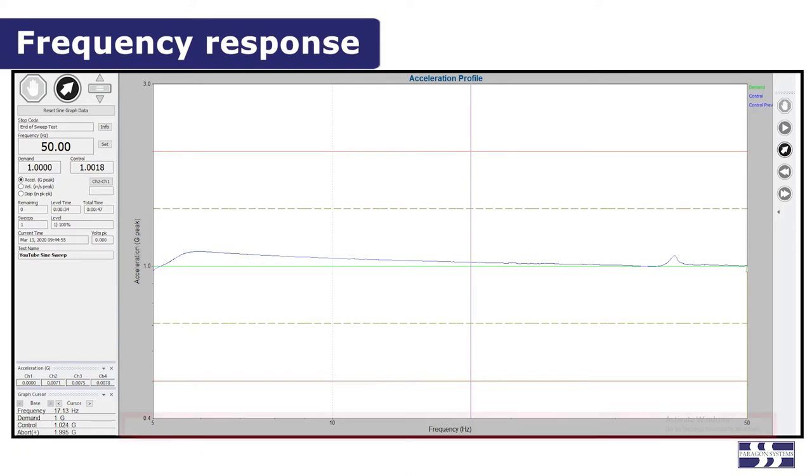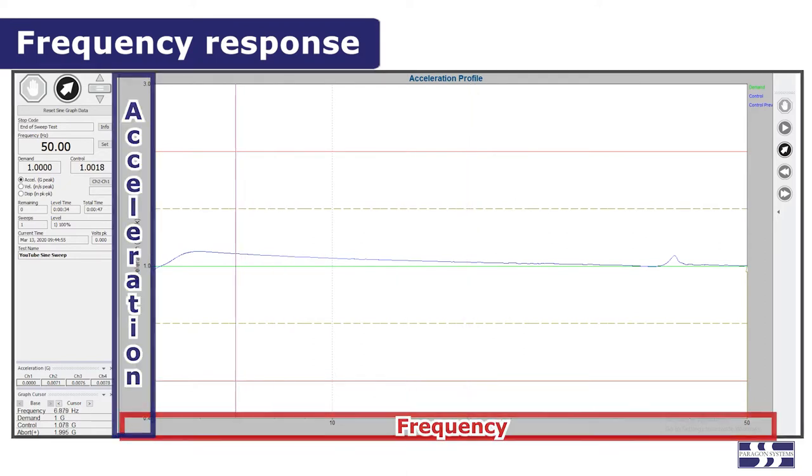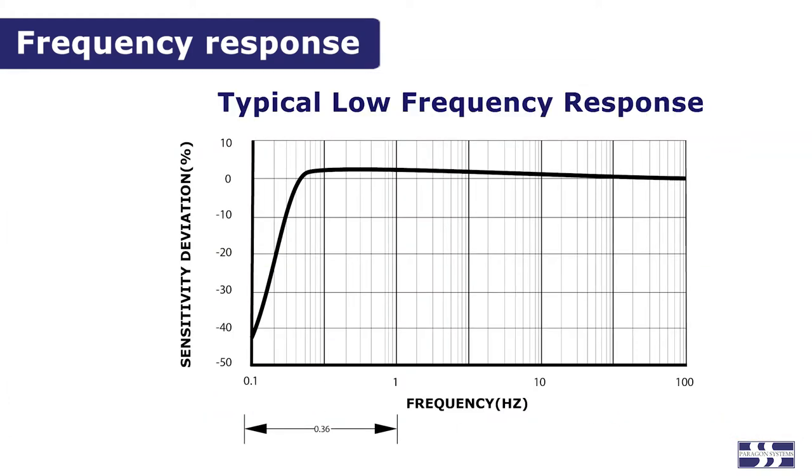Accelerometers are designed to measure acceleration accurately over a range of frequencies. Some are optimized for lower frequencies, even down to DC levels. Others are good at measuring very high frequencies, but can't accurately measure below 2 Hz.